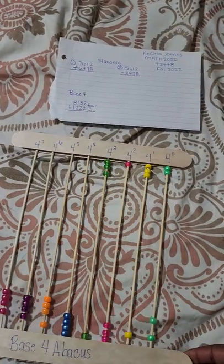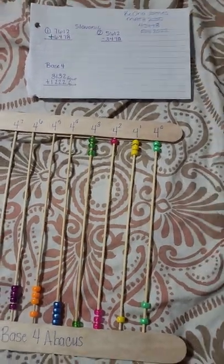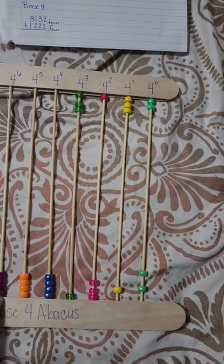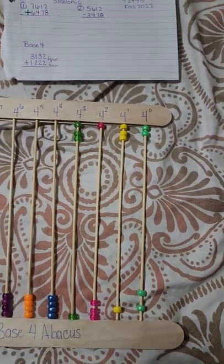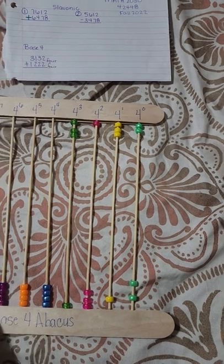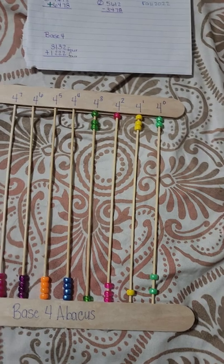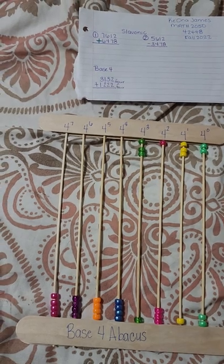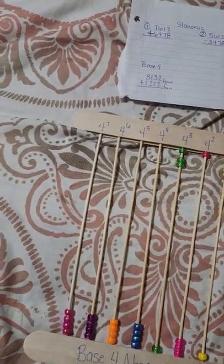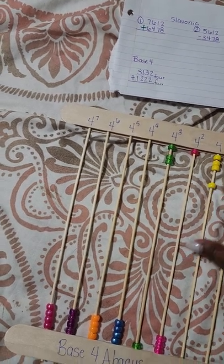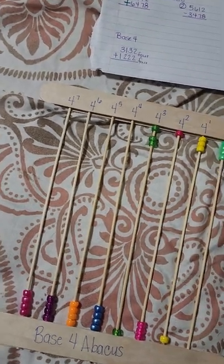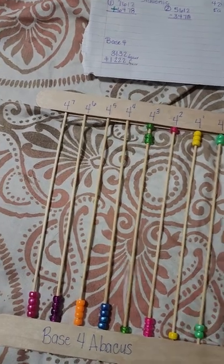Now we're going to move on to our base-4 abacus. You'll notice that there are only four beads on each row — that is the most you can put on a row in a base-4 abacus. Just as in base-10 the most is ten, here if we have four and regroup, that four makes one. The same rules apply.